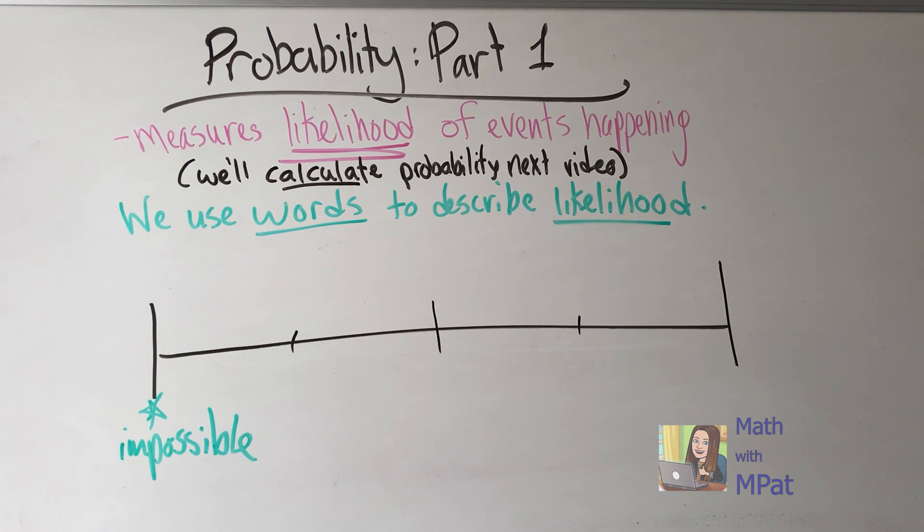There's no way it's going to happen. Sometimes you'll hear people say, oh it'll happen when pigs fly. Well pigs aren't going to fly, at least not now. So they're telling you that that event is never going to happen.